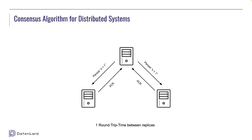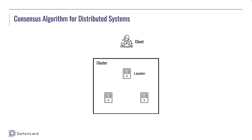This is a simplified version of the consensus protocol. Actually, the real consensus protocols are far more complex than this simple graph. Let's see what the consensus algorithm for distributed systems looks like in the real world. We have a cluster consisting of three replicas and a client. The client sends a request to the cluster — usually to a single replica, which we call the leader.